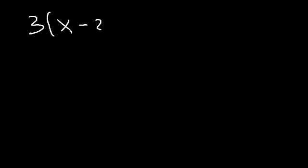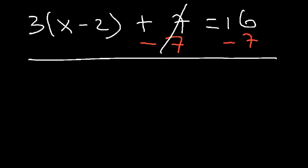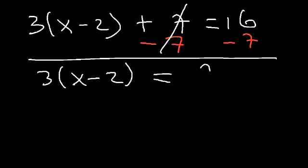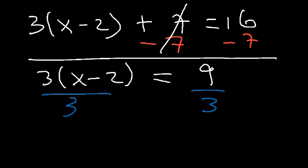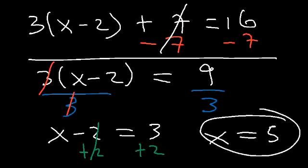Now what do we need to do if we have parentheses in the equation? You have options: you can distribute or you can subtract both sides by 7 first. Subtracting both sides by 7 gives us 3 times (x minus 2) is equal to 9. Now I can divide both sides by 3, since 3 is multiplied by the entire (x minus 2). These will cancel, and since there's no longer a number in front of the parentheses, it's simply x minus 2. 9 divided by 3 is 3. The last step is to add 2 to both sides: 3 plus 2 is 5. Therefore x is equal to 5.